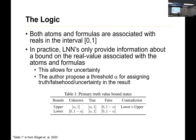Likewise, for the upper bound, it's between alpha and one, or true. For the lower bound, if it's between zero and — so for a positive atom, alpha and one is true, and for the false version, zero and one minus alpha. And then likewise, you can flip those around.